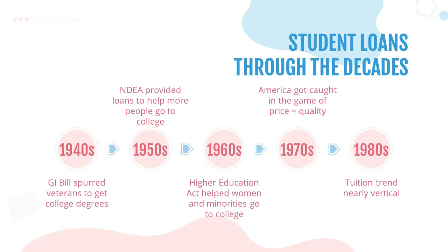Going through to the 1990s, more amendments were passed that allowed for unsubsidized loans regardless of financial need. This created FAFSA and pilot income-based repayment plans, which would become a big cornerstone in how student loan repayment works today.